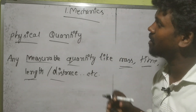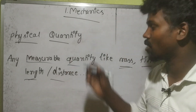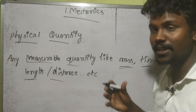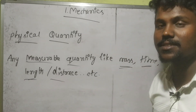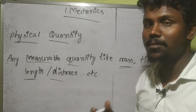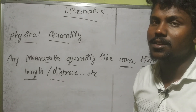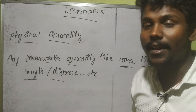The first unit is mechanics, and the first concept is physical quantity. A physical quantity is any measurable quantity. For example, mass, time, distance, and length are all physical quantities.